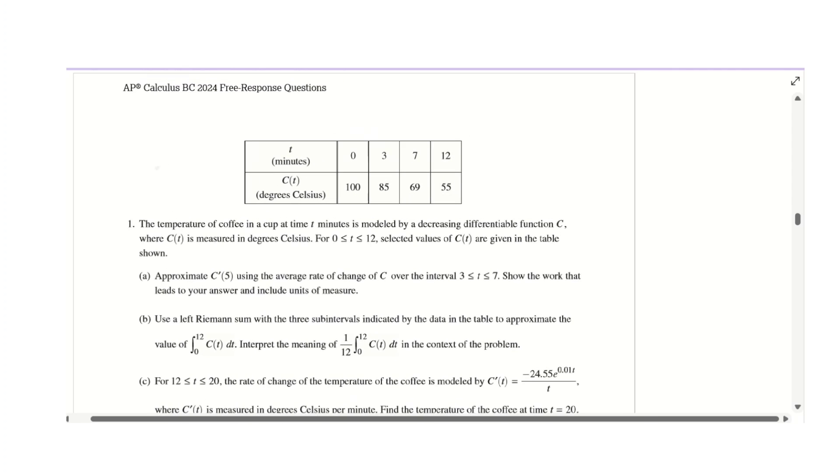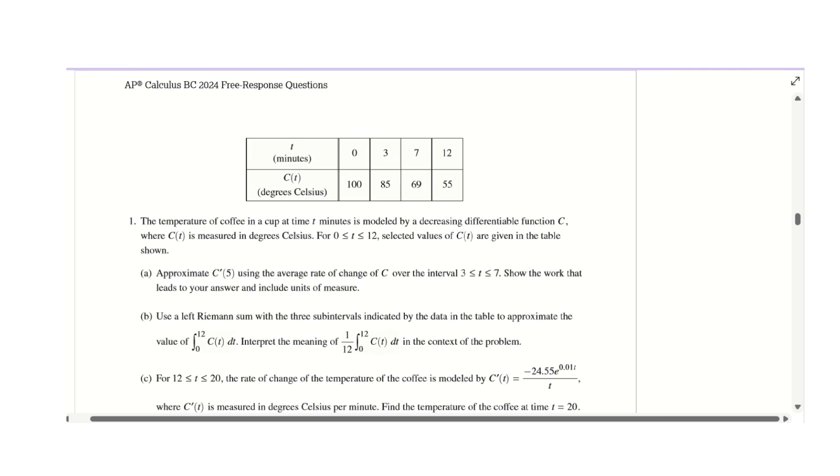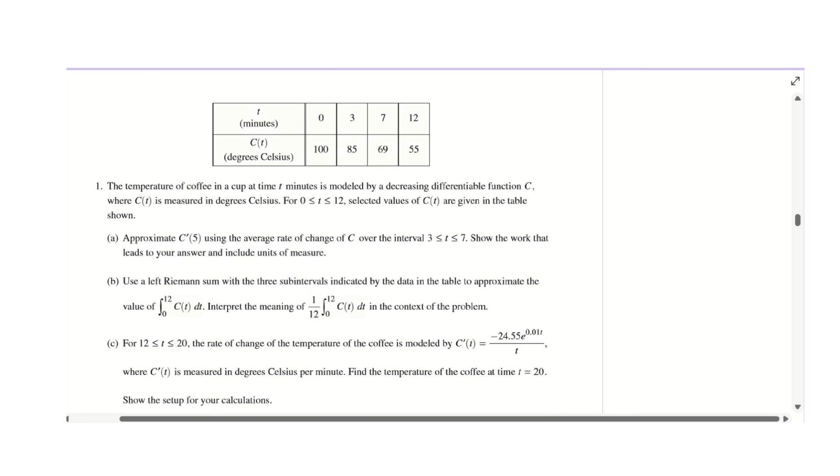The problem states: temperature of a coffee cup at time t minutes modeled by decreasing differential function C(t) measured in degrees Celsius. Select values of t are given in the table. Part A asks us to approximate C'(5) using average rate of change of C over the interval 3 to 7.